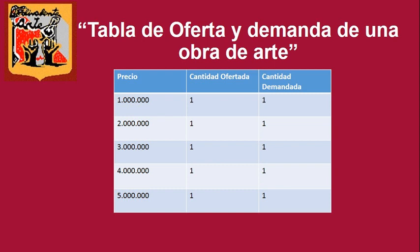Tabla de oferta y demanda de una obra de arte. Imaginemos que estamos en una subasta con mucha gente queriendo comprar una obra de arte. Cada comprador va a levantar un cartelito: uno ofrece un millón, otro ofrece dos millones, otro tres millones, otro cuatro millones, otro cinco millones. Cinco millones a la una, a las dos, a las tres: vendido. ¿A cuántas personas se la vendieron? A una sola.